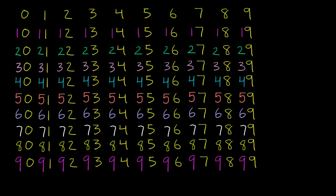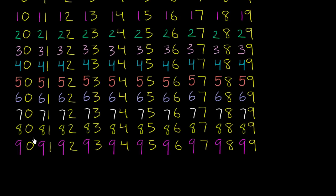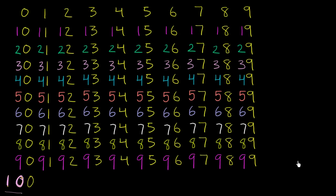And if we just want to feel good, we could throw in 100 right over there. And you see that the pattern still holds — we went from 1, 2, 3, 4, 5, 6, 7, 8, 9, and now we got to 10, followed by a 0. That was pretty neat.